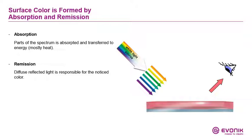Surface color is formed by absorption and remission, as you can see here on the slide. We need some light. White light is a mixture of different wavelengths, and when this hits the surface, some specific wavelengths are absorbed and only specific wavelengths are emitted. We can see these specific wavelengths and call it a color — the surface color. So that means color is formed by absorption.